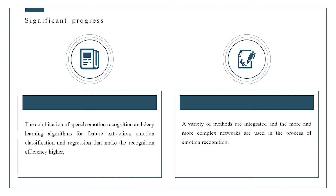A variety of models are integrated and more complex networks are used in the process of emotion recognition. This paper describes current technology and progress from five aspects: the development of speech emotion recognition, emotion description models, emotion speech database, feature extraction and emotion recognition algorithms. We mainly discuss the research progress of feature extraction, recognition and classification algorithms in speech emotion recognition.